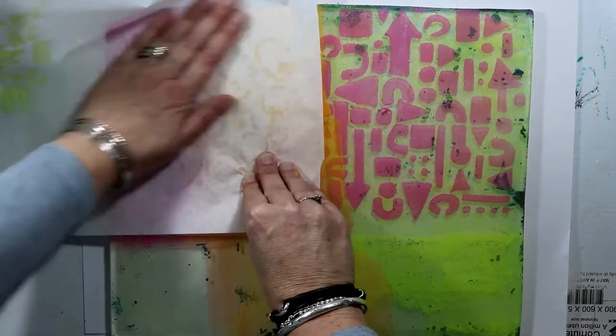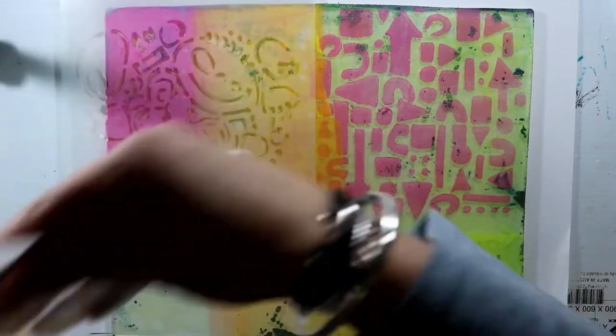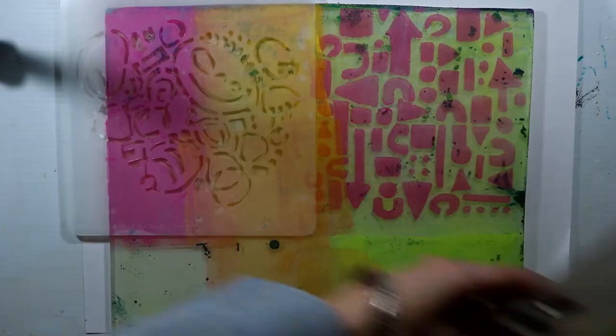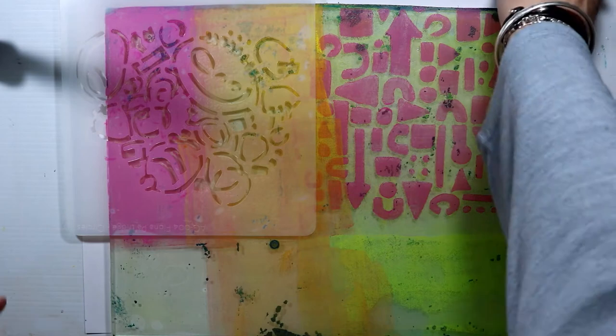Here I've done a bit of an ombre effect with this stencil with the paint underneath. I've popped my circle stencil over the top and look at that. You don't just have to do a one color press, you can do two colors.